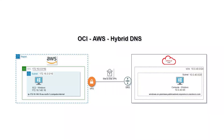Hello everyone. In this demo we will implement hybrid DNS with AWS Route 53. Let's look at the architecture diagram. We already have a site-to-site VPN implemented for connectivity between AWS and OCI. You can also implement FastConnect private peering. For hybrid DNS, we will implement resolver endpoints on both clouds.